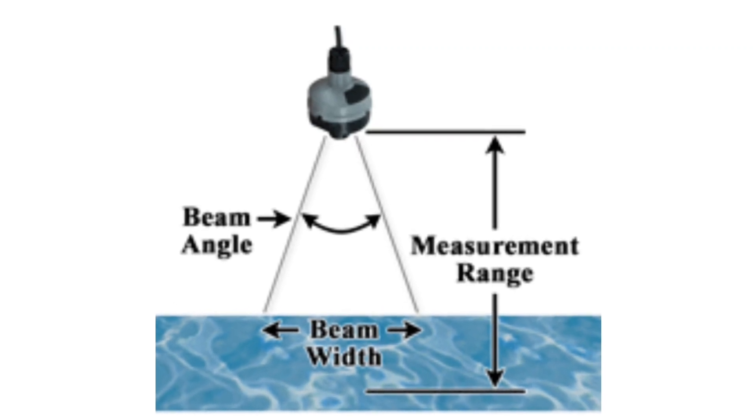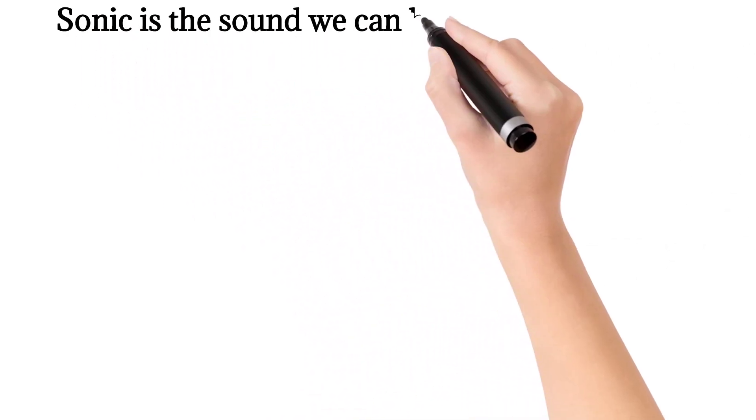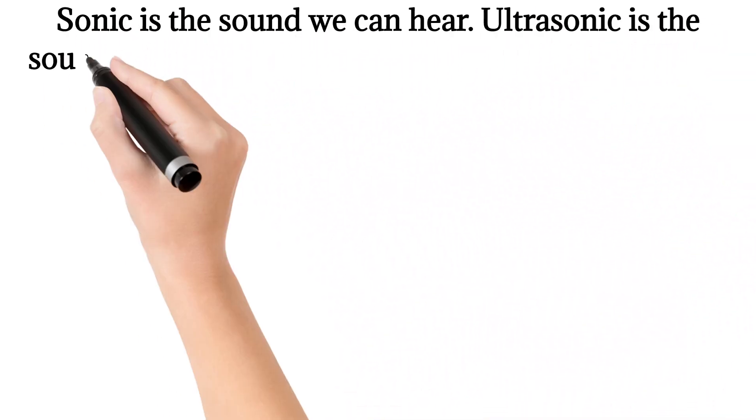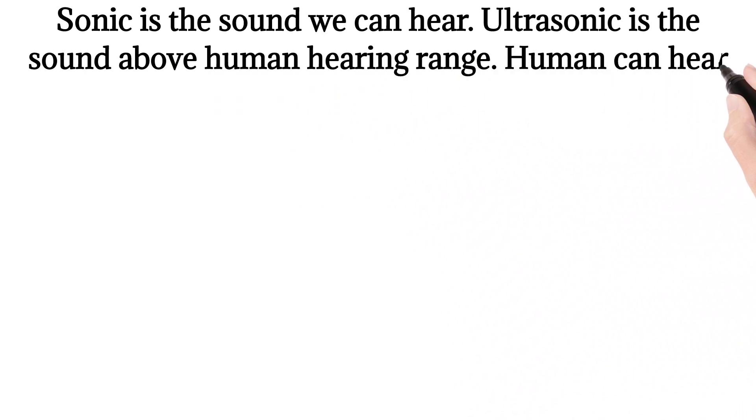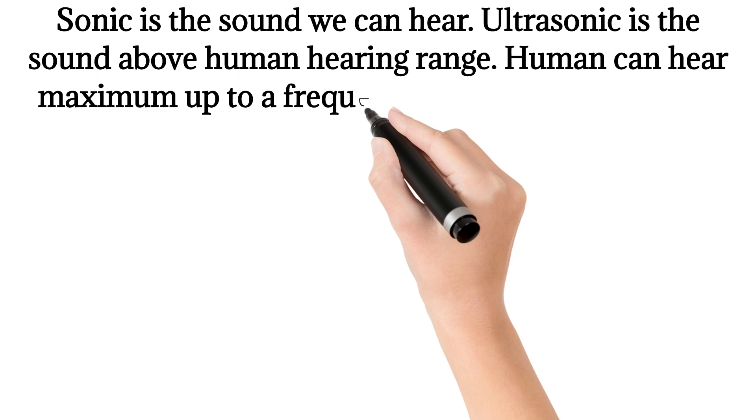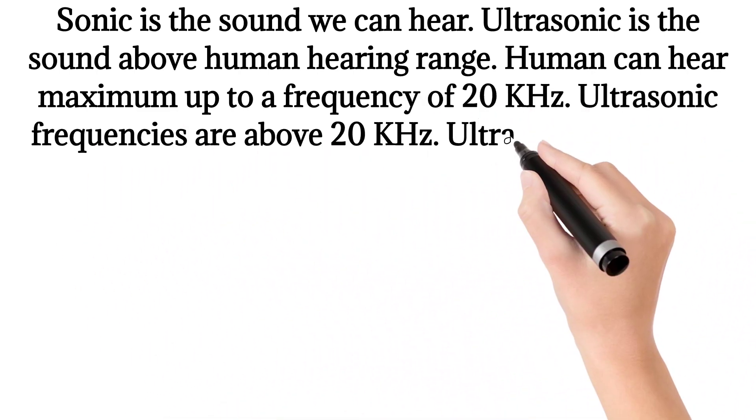In this video we will discuss ultrasonic level transmitters. Sonic is the sound we can hear. Ultrasonic is the sound above human hearing range. Humans can hear maximum up to a frequency of 20 kHz. Ultrasonic frequencies are above 20 kHz.